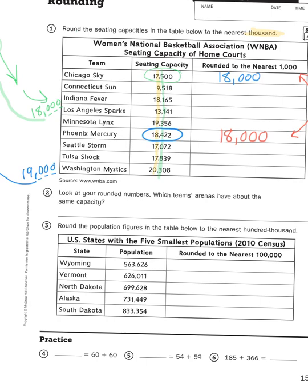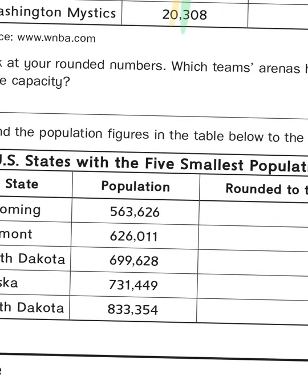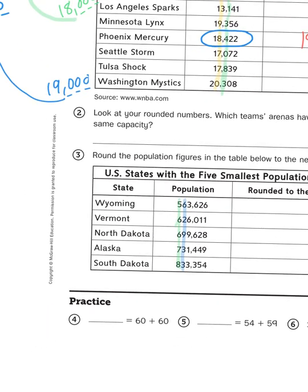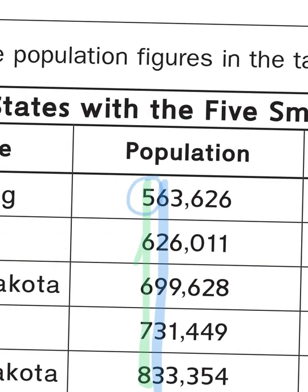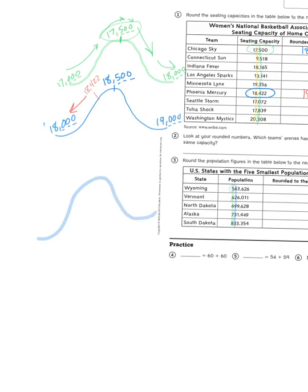The same thing happens with problem number three — this time we're comparing population rounded to the nearest hundred thousand. A hundred thousand is a one with five zeros behind it. I'm only going to be looking at two place values: the hundred thousands, and the ten thousands right next to it. When I round to the nearest hundred thousand, I ask: is it closer to the lower hundred thousand or do I need to go up? Let's look at Wyoming as an example.